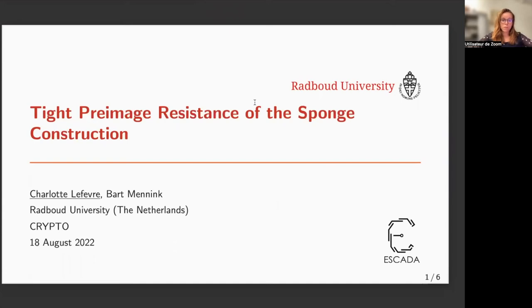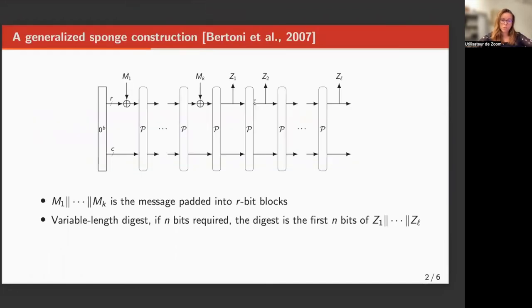Hi everyone! This is an overview of our paper with Barth Menik named Type-Image Resistance of the Sponge Construction. We focus on the sponge used for hashing purposes based on a permutation.